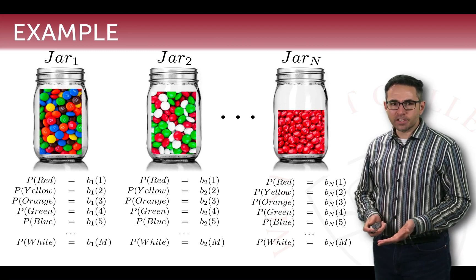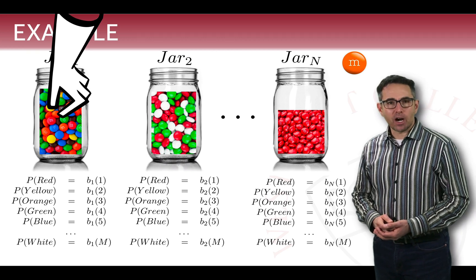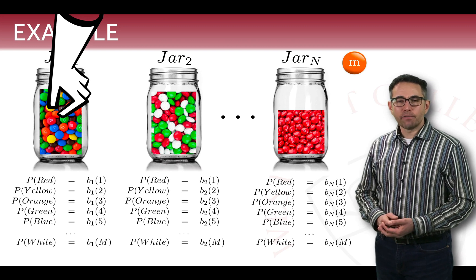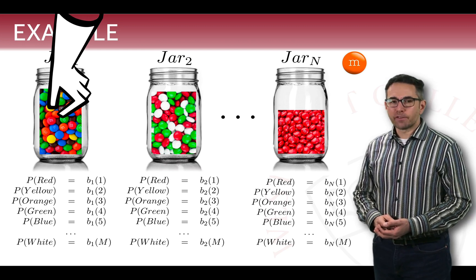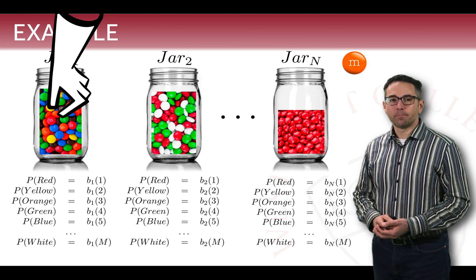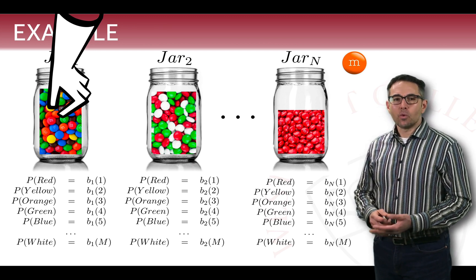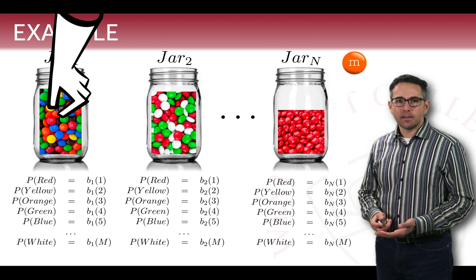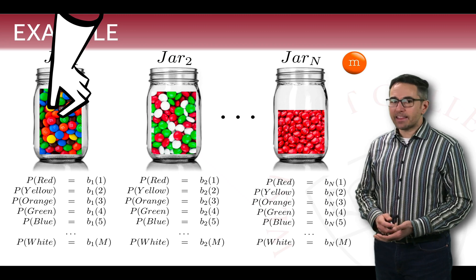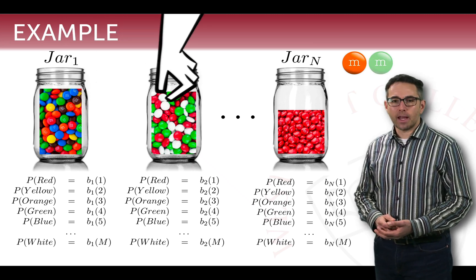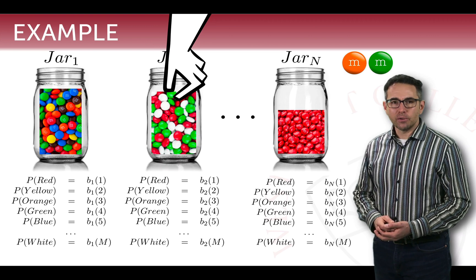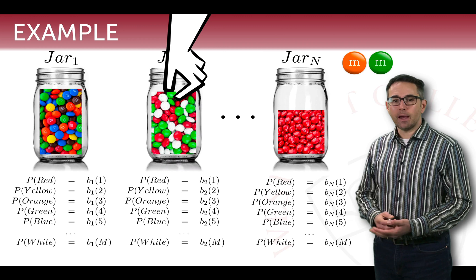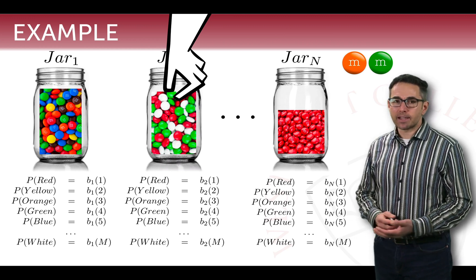So let's walk through what this might look like. Perhaps we'll start by drawing from jar 1. And from jar 1, we'll draw an orange M&M. So our first observation is orange. Our first state is jar 1. Now we'll proceed to a second jar. Which jar we go to next depends on a transition probability, given that we're currently in jar 1. So let's say that the next jar we go to is chosen randomly to be jar 2. And from jar 2, according to the probability distribution of candies that are in that jar, we draw a green M&M. We can only draw a red, white, or green, so that seems appropriate.